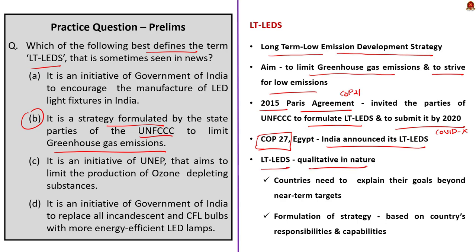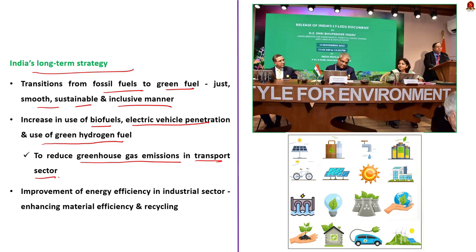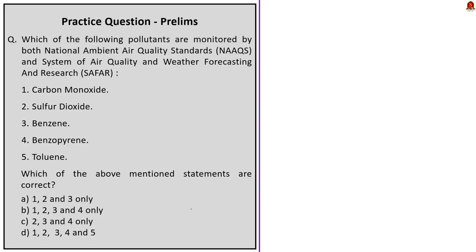LT-LEDS are qualitative in nature. Through this strategy, countries must explain how they will transition their economies beyond achieving near-term emission reduction targets. Strategies should be formulated based on countries' responsibilities and capabilities per their national circumstances. India's strategy involves transitioning from fossil fuel to green fuel in a just, smooth, sustainable and inclusive manner. India will also increase use of biofuels, electric vehicle penetration and green hydrogen fuel to reduce greenhouse gas emissions in the transport sector. Additionally, India will improve energy efficiency in the industrial sector through enhanced material efficiency and recycling.